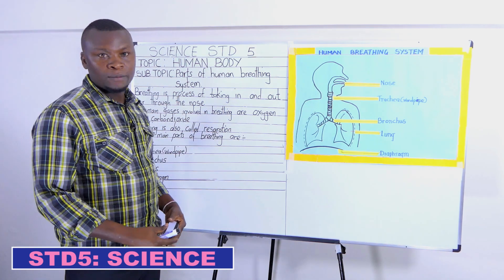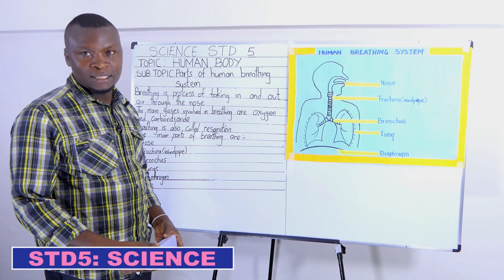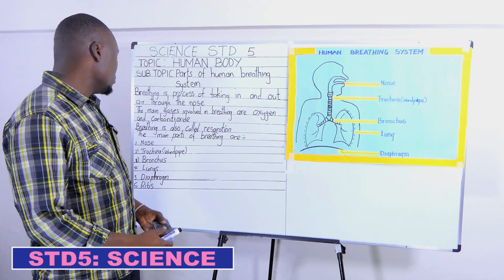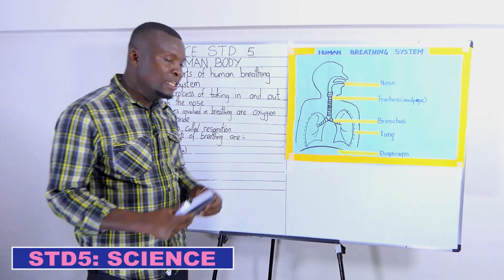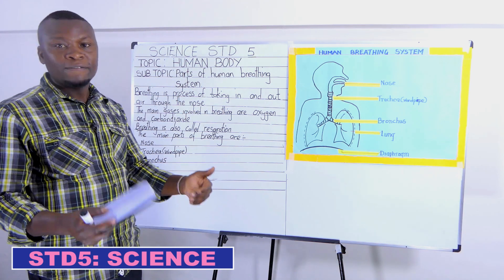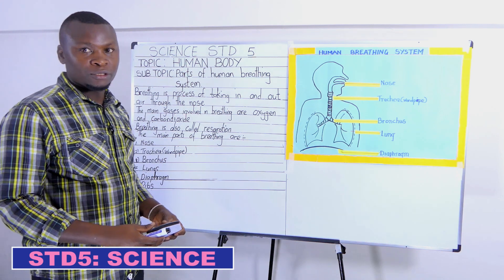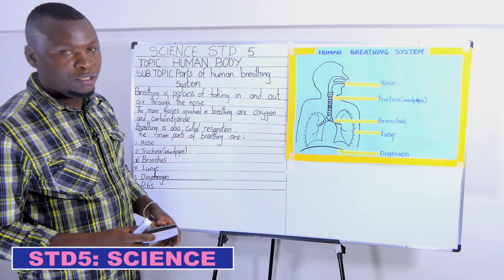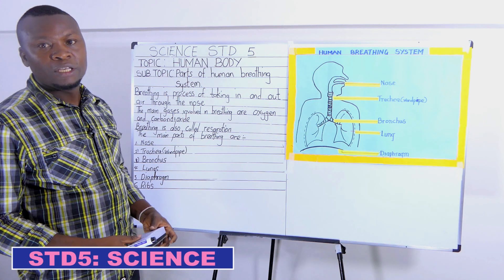For breathing to take place, there must be very important body parts that work together to make our body function very well. We have to understand that breathing is a system. A system is made up of several parts that work together to achieve a common function. For our body to achieve the function of breathing in and out — that is respiration — there must be body parts that are involved.